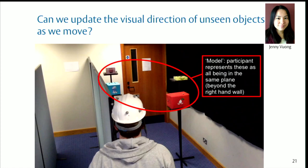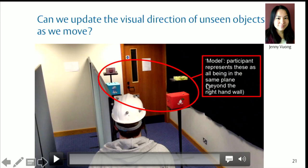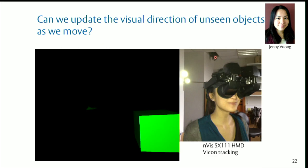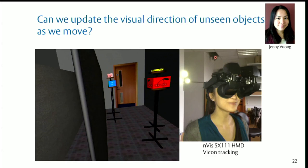The answer I'll show you: the model is that the participant represents all the boxes as being in the same plane — a plane that's beyond the right-hand wall. People are really not very good at this task. So the challenge — 'of course you have a 3D model in the head, of course you can update your visual direction and point' — well, it turns out you can't. We did it in virtual reality as well, and it looks pretty much the same.